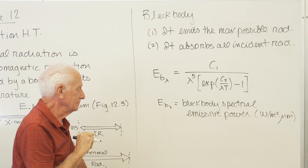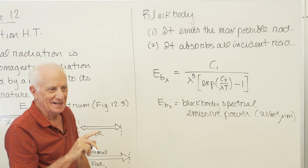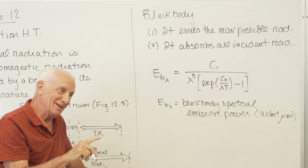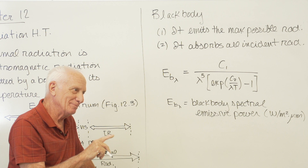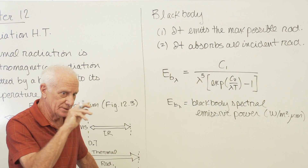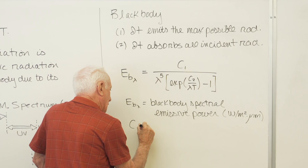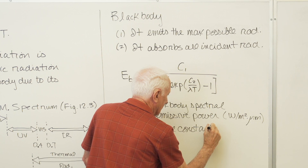Just a reminder: anything to do with radiation, every time we see a temperature it has to be absolute. If we're given a problem in degrees C, add 273 to get degrees K. Convert to absolute right away before you start the problem, otherwise you might make a silly mistake. C1 and C2 are constants — see the text for values.